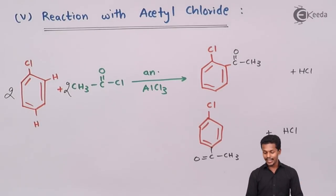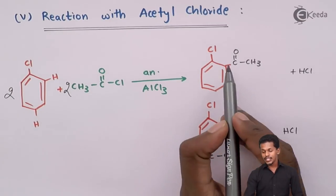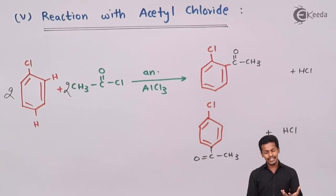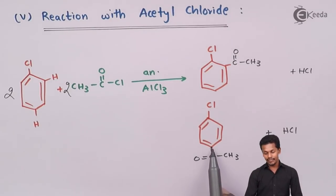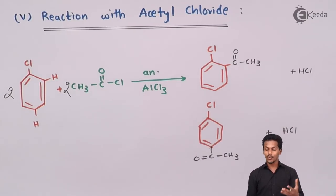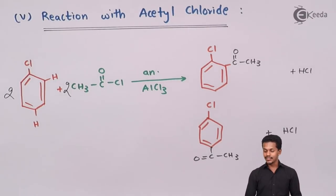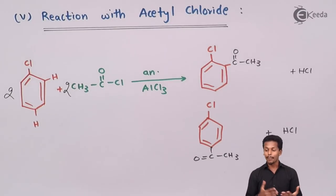Depending on these products: considering carbon number 1 and carbon number 2, the ortho product is named 2-chloroacetophenone. For the para product — carbon 1, 2, 3, and 4 — the name is 4-chloroacetophenone. The major product we get is the para product, 4-chloroacetophenone.